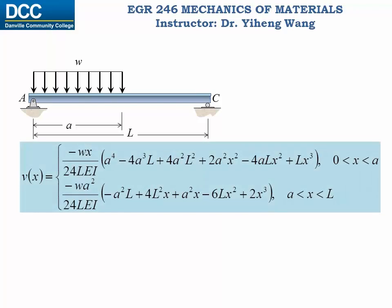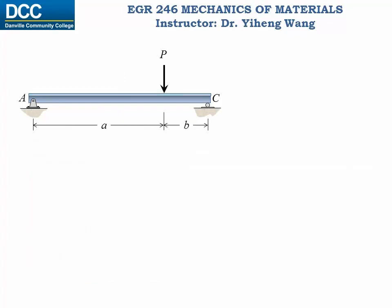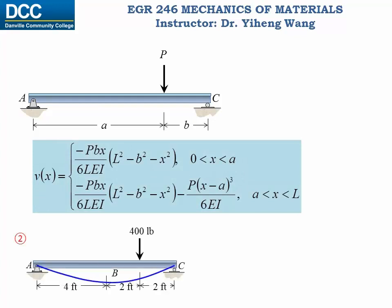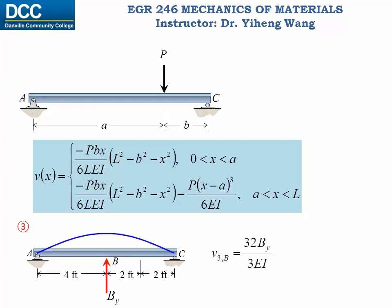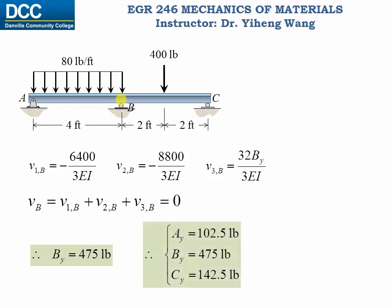For the simply supported beam subjected to the distributed load, I looked up its deflection function, and for situation one I can evaluate the deflection at point B accordingly. For the simply supported beam subjected to the concentrated load, I again looked up its deflection function and evaluated the deflection at point B in situation two, as well as the deflection at point B in situation three, which contains our unknown support reaction BY. Substituting them into the compatibility condition, I can solve for the support reaction BY to be 475 pounds. Once BY is evaluated, this beam is no longer statically indeterminate, and we can solve for the support reactions at point A and C using equilibrium, which are the same results we got in the previous video using the method of integration.